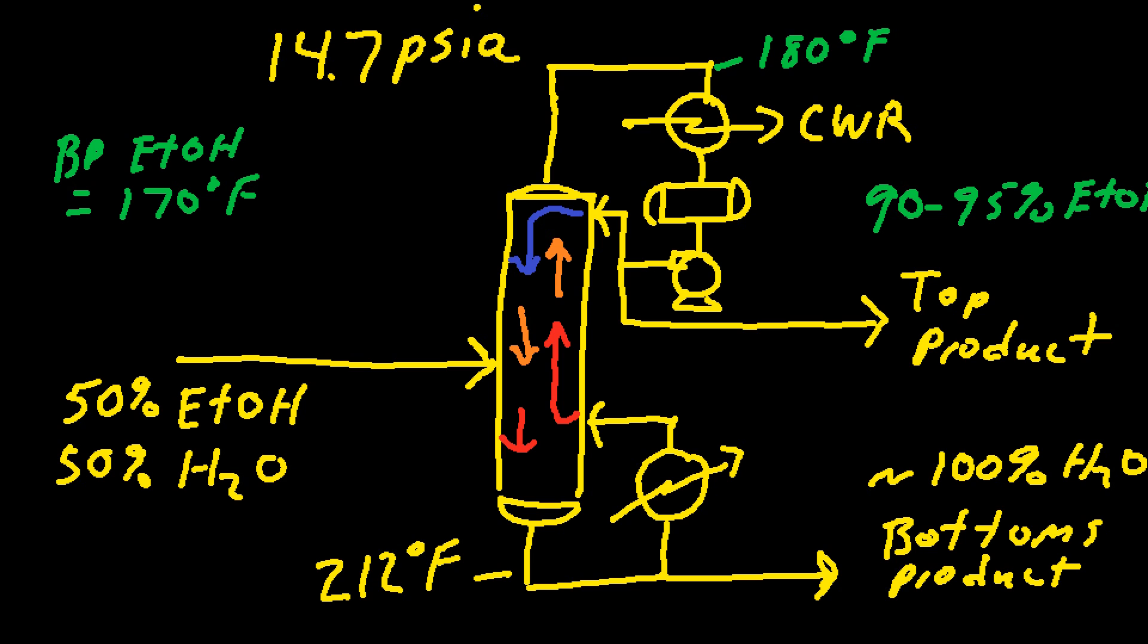The hot temperatures at the bottom of the tower tend to drive the ethanol out of those liquids and drive them up the tower. Up at the top of the tower the cool temperatures tend to condense the water and send the water back down the tower. So every tray in that distillation column works to send ethanol vapors up and water vapors down.